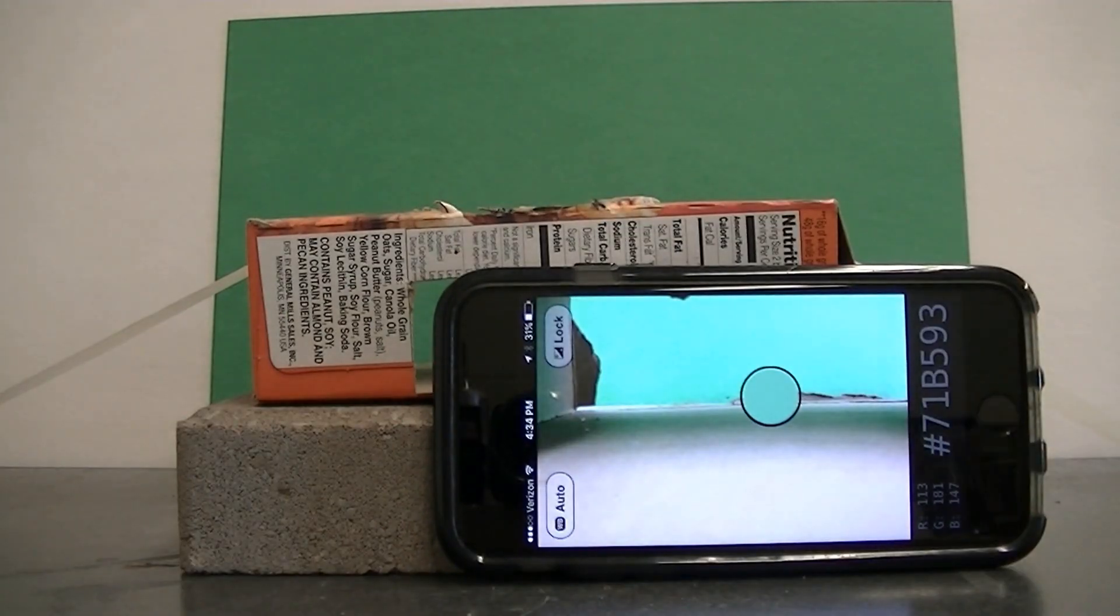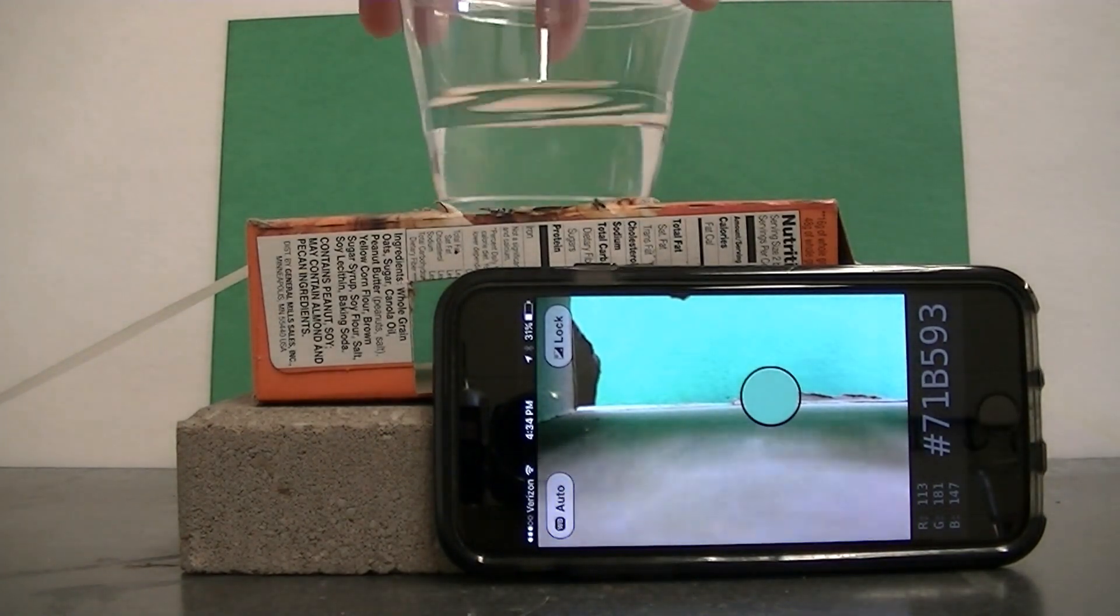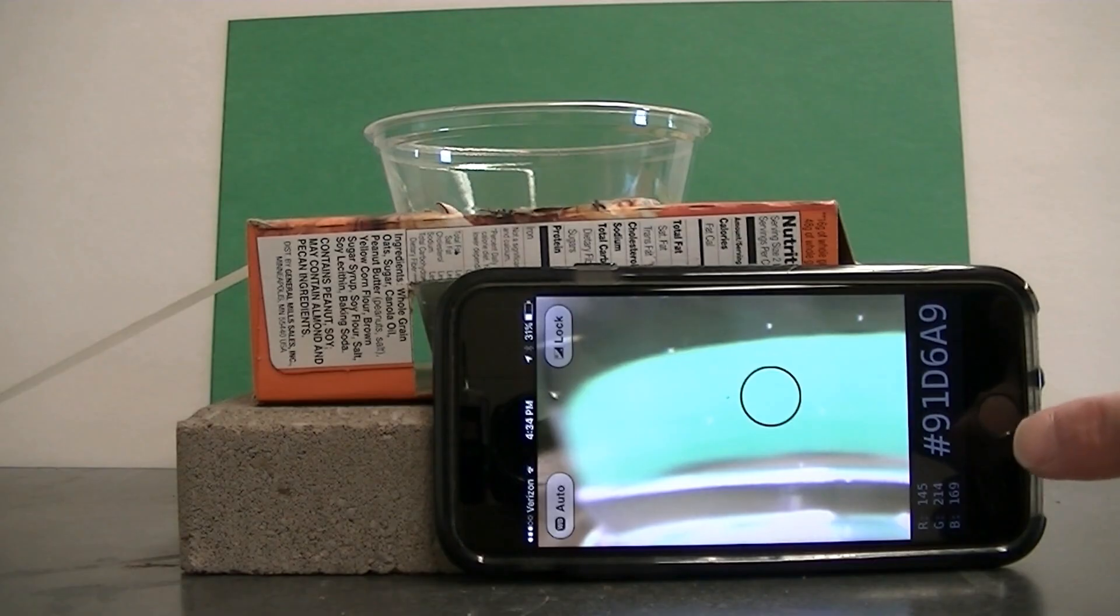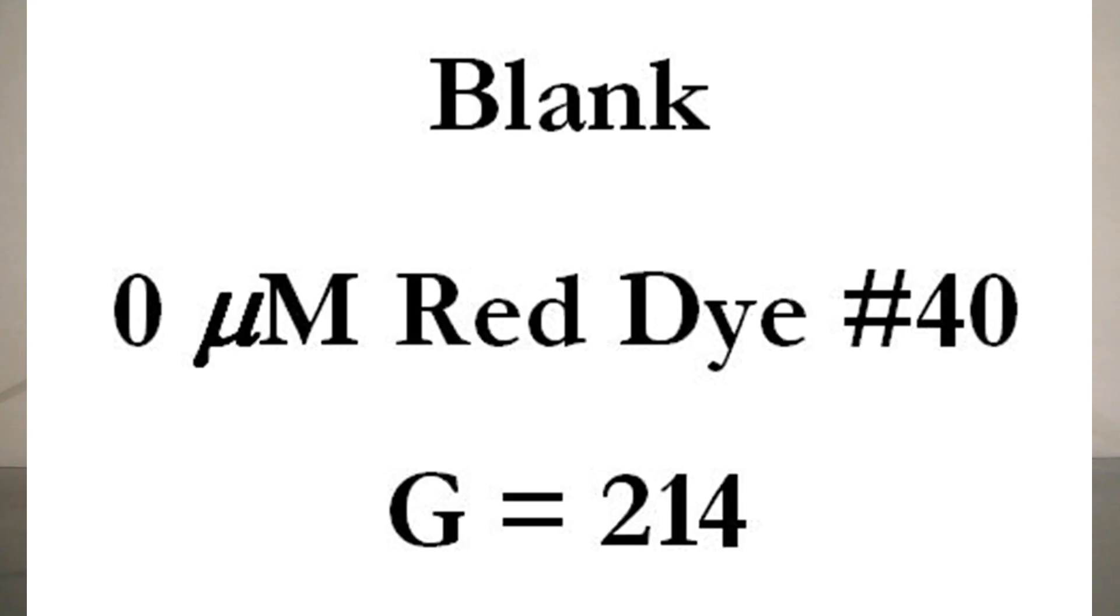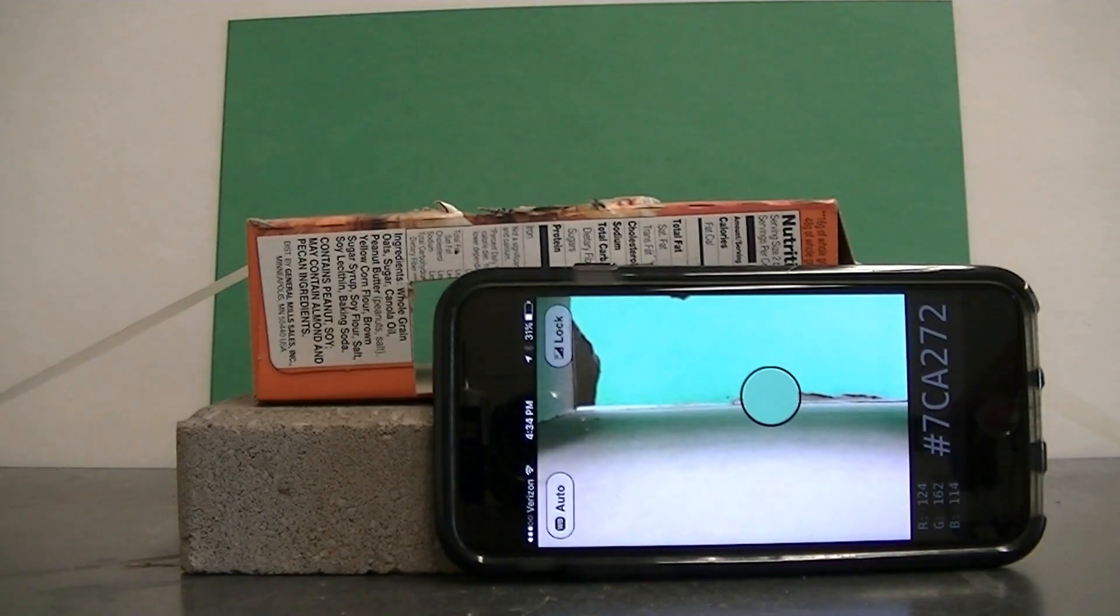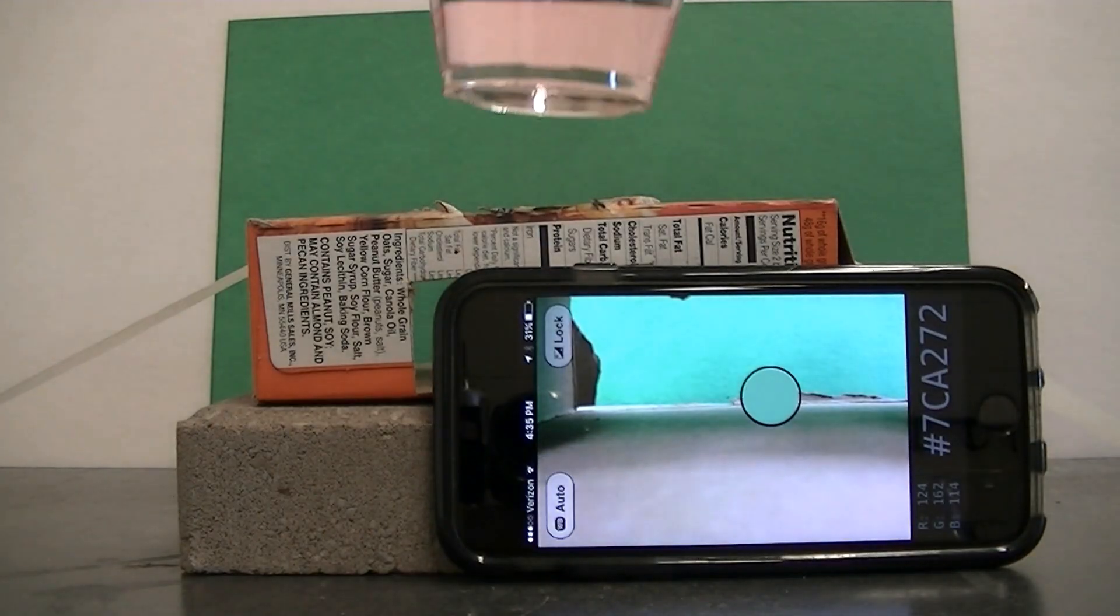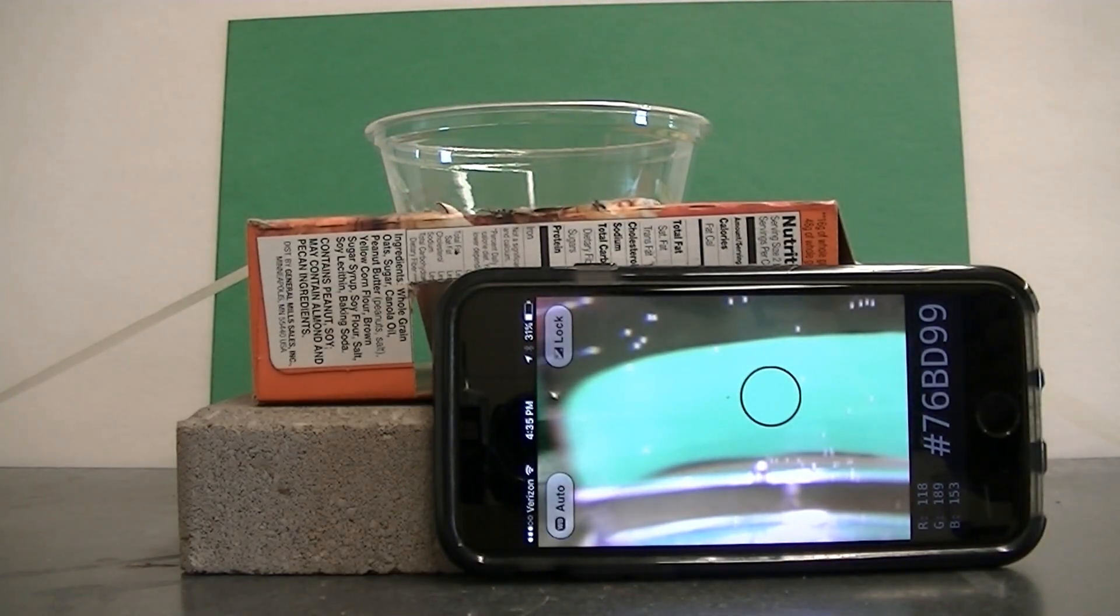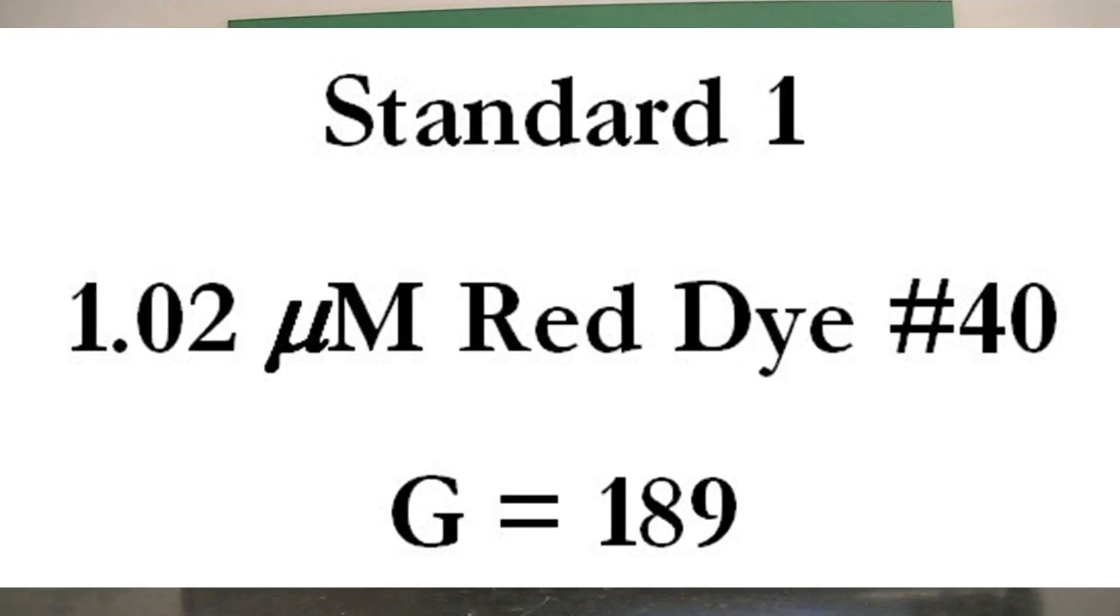Okay so first we're going to detect the green light that passes through our blank which is just water. And it looks like my green value is going to be 214 for the blank. Now I'm going to test my standards. And again my standards were made from the fruit punch Powerade Zero. This particular standard has a concentration of 1.02 micromolar red dye 40 and we can see that its green value is 189. So it looks like a little bit of that green light's been absorbed which we'd expect.